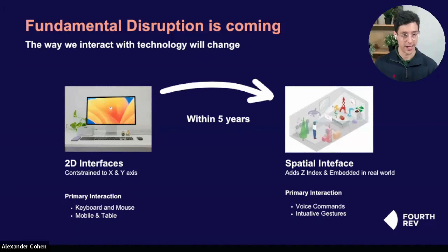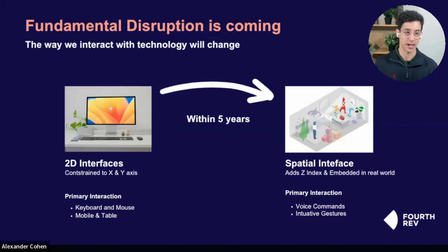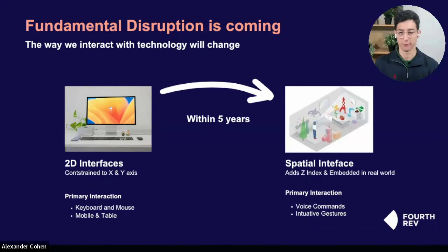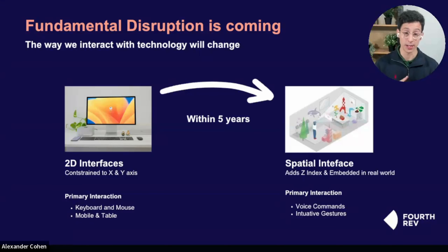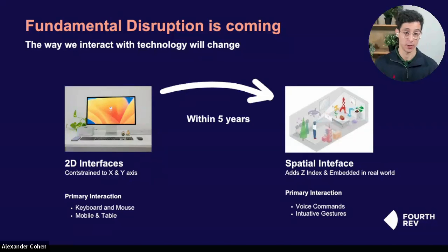When we talk about creating new products right now, especially in the digital context in web and applications, we usually talk about them in a 2D context — what does the screen look like in an X and Y axis, where do we put the button, how does the user experience flow, and what inputs do the users need to provide via keyboard and mouse, or on mobile and tablet through touch. But ultimately, within five years, spatial computing is going to be one of the primary ways — if not the primary way — that we interact with digital content. When we add a Z axis to our interfaces, it's going to fundamentally change the way that we interact with our products.